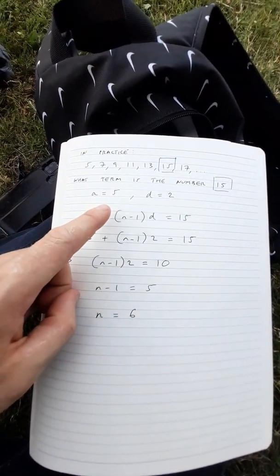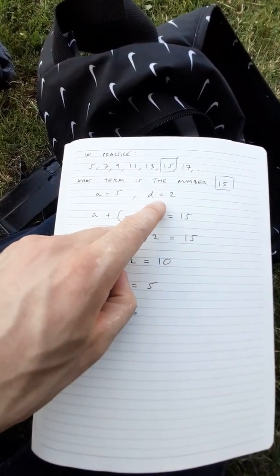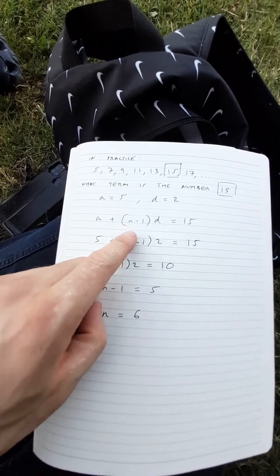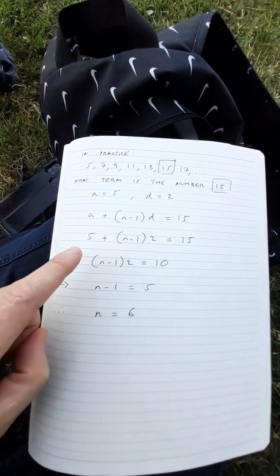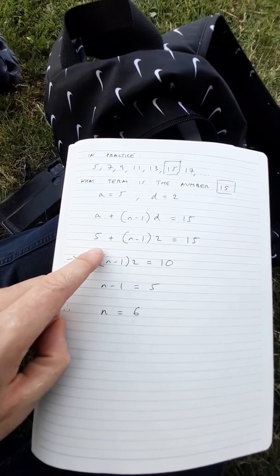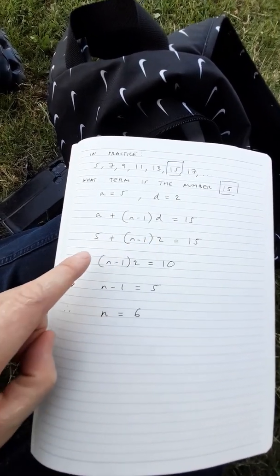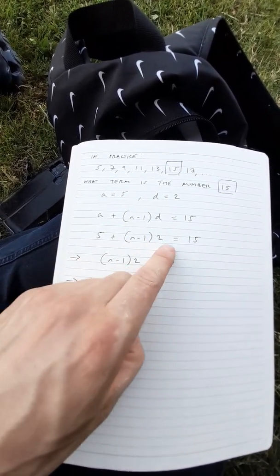We know that a is 5 and d is equal to 2. So let's get this expression over here, set it to 15, and then change a to 5 and d to 2.